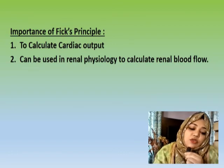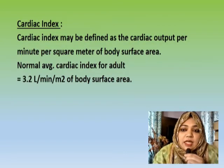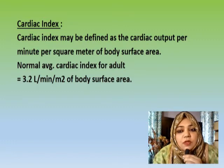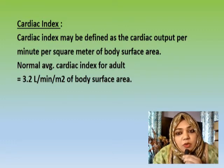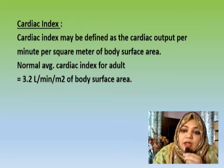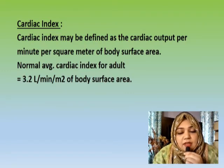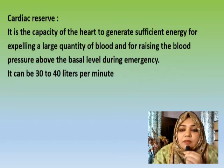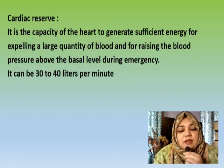There are two other definitions you need to know. Cardiac index may be defined as the cardiac output per minute per square meter of body surface area. The normal average cardiac index for an adult is 3.2 liters per minute per meter squared of body surface area.